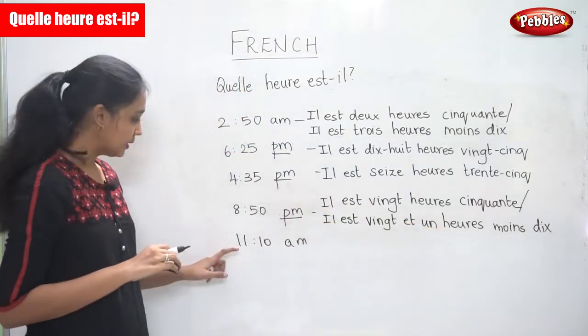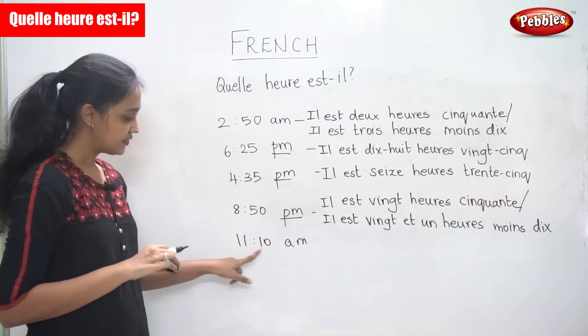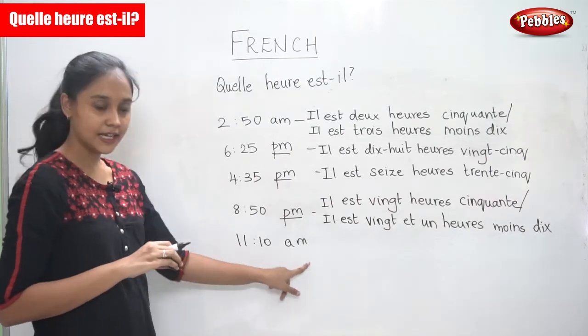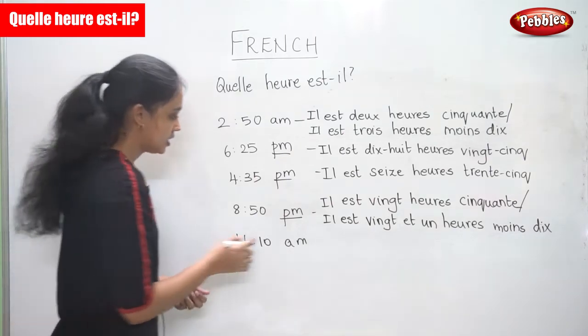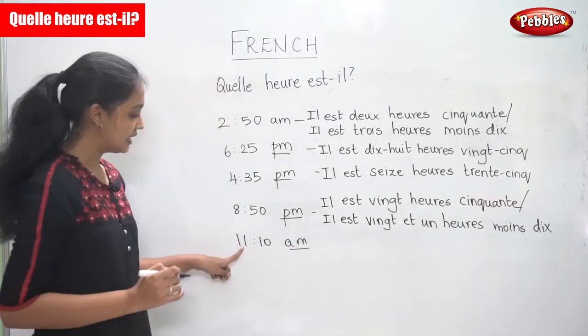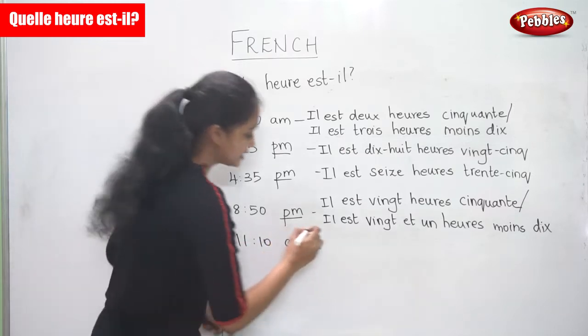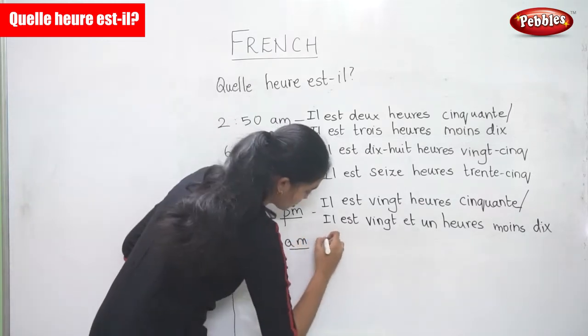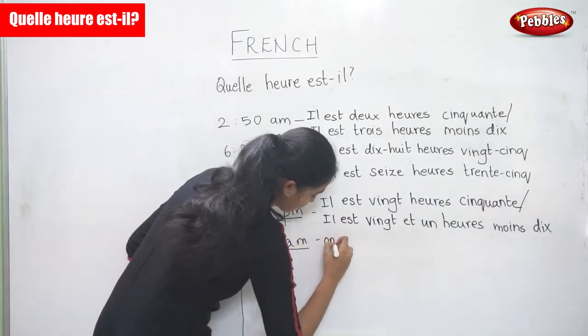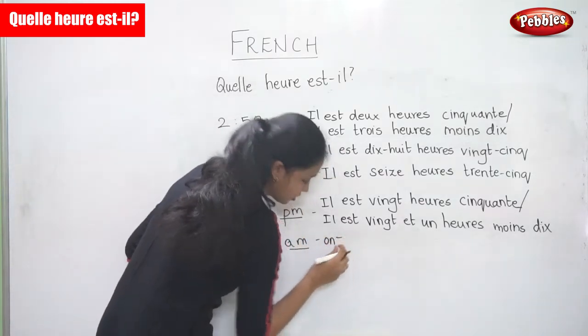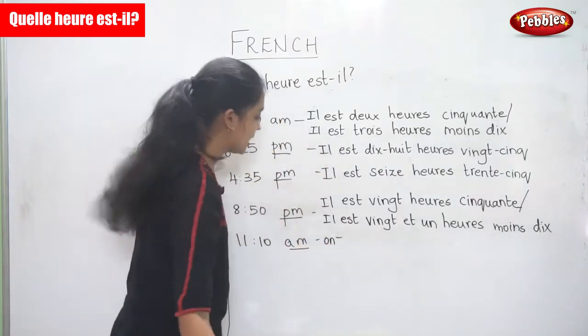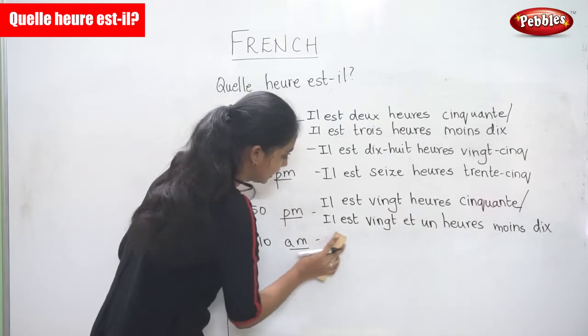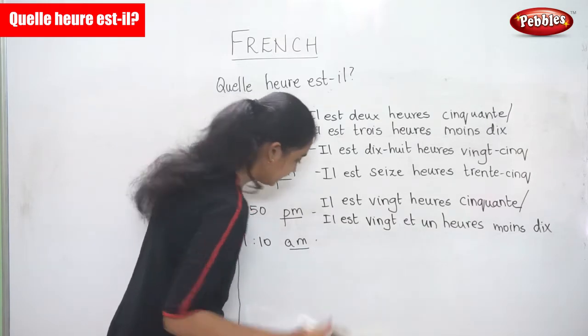Now the last one: eleven ten AM. Since it is AM, eleven is 'onze.' So you should start it with 'il est onze heures dix.'